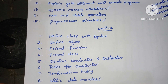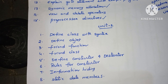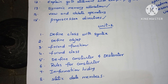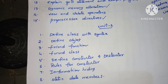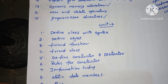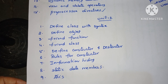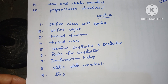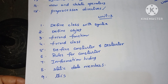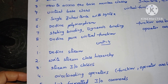Next, Unit 2 important questions. This unit is totally about concepts of classes and objects. Define class with syntax. Define object. Explain about friend function — definition of friend function, definition of friend class. Define constructor — important question. What is destructor? Next, what are the rules for constructor? Explain about information hiding. Explain about static data members and reserved words like 'this' and 'static' — those are also very important. Explain about the 'this' reserved word and explain about the 'static' reserved word. Those are the important questions in Unit 2.